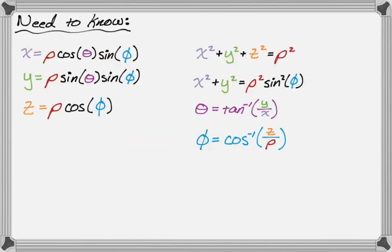Let's take a look at the stuff you definitely need to know. You need to know what x, y, and z are when writing them in spherical coordinates: x = ρcos(θ)sin(φ), y = ρsin(θ)sin(φ), and z = ρcos(φ).